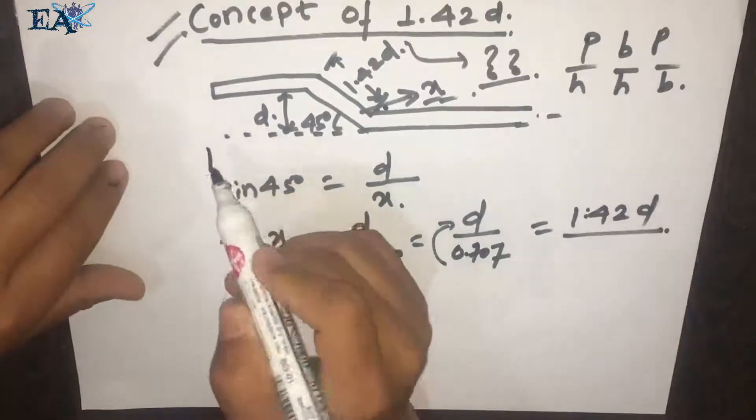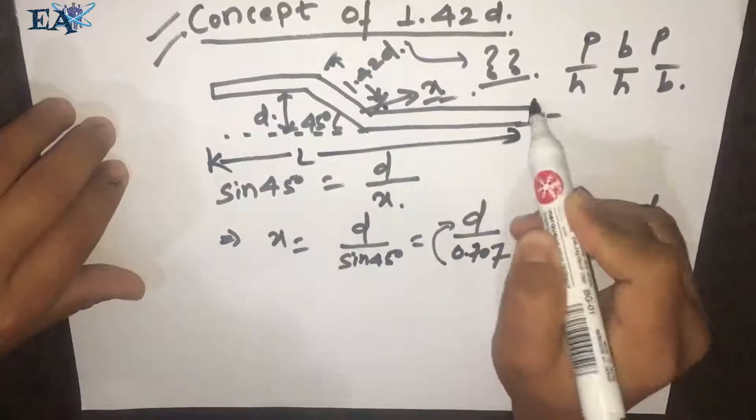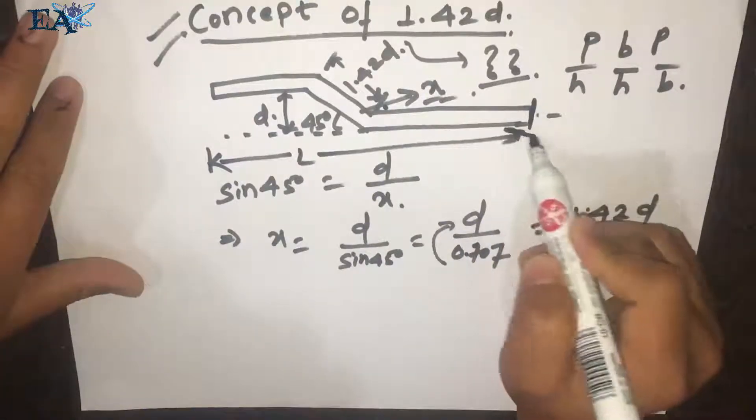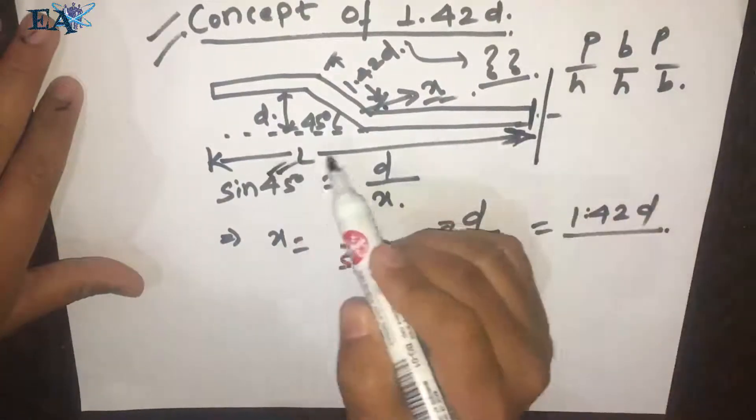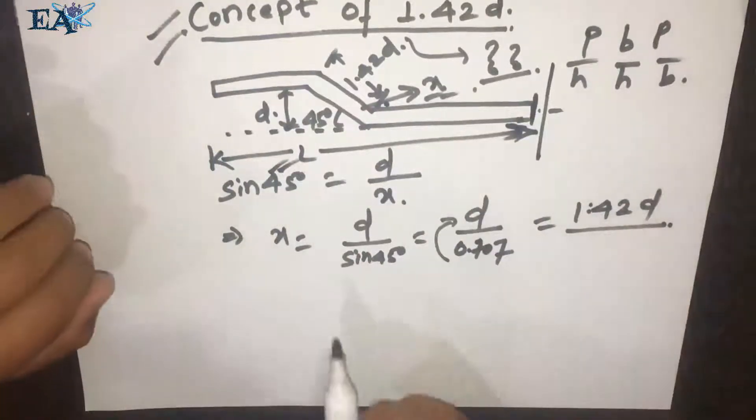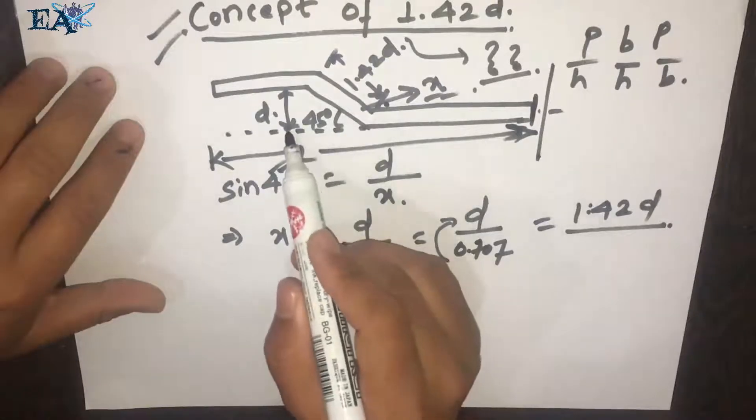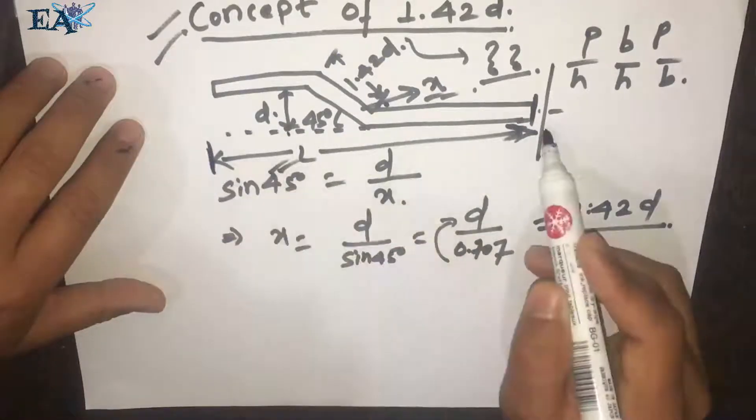Now let us say that the length of the beam is L. The total effective span of this beam, or the clear span of this beam, is L.